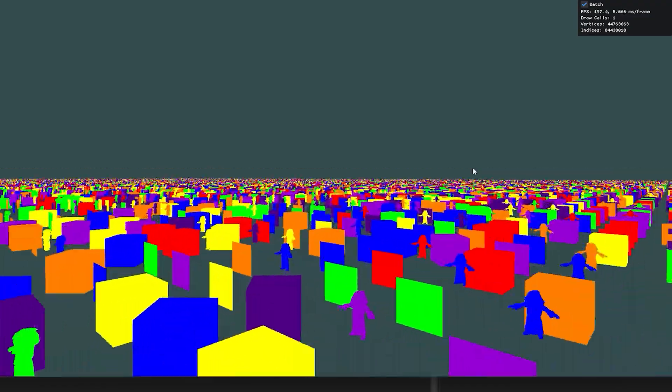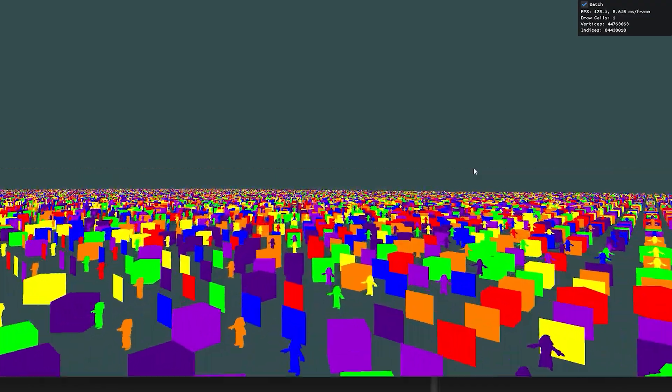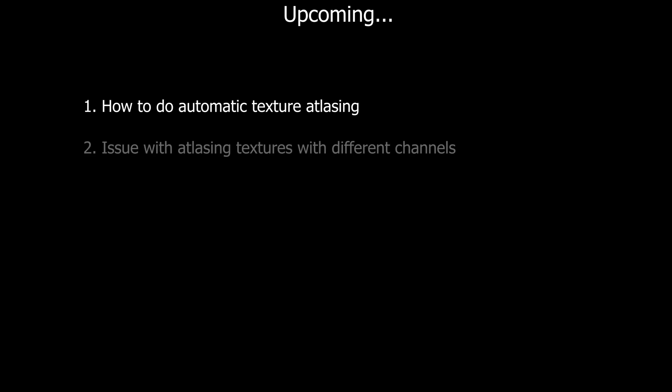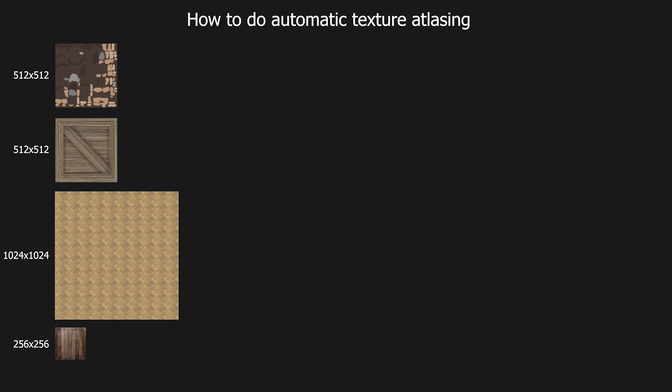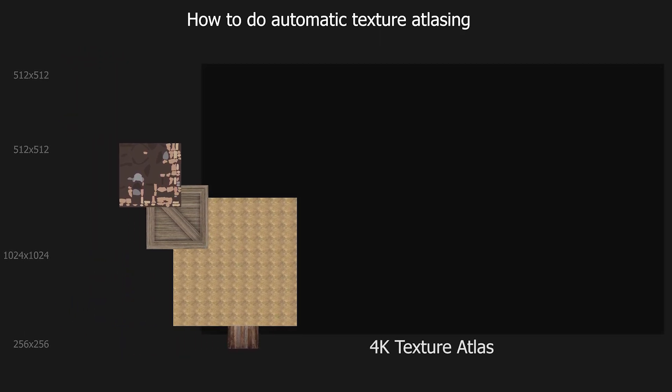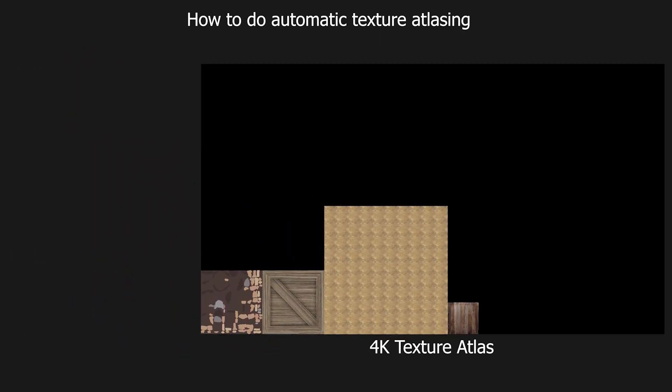In the last two videos we saw how to batch meshes to reduce the number of draw calls and how to do texture atlasing. In this video we'll see how to do automatic texture atlasing, an issue related to atlasing textures with different channels, and the final output after applying textures from the generated texture atlas. To explain it, we have a set of textures that we'll be pushing to a 4K texture atlas, and then later fetch a particular texture from that atlas using the texture ID.